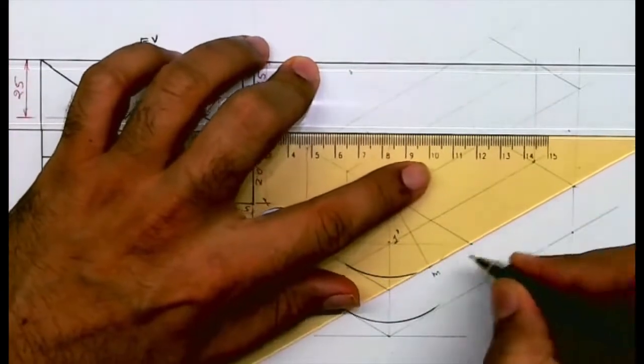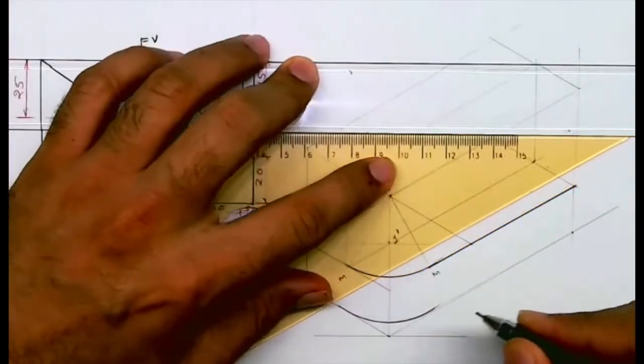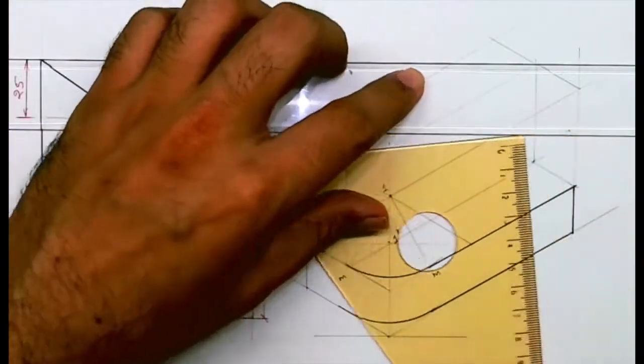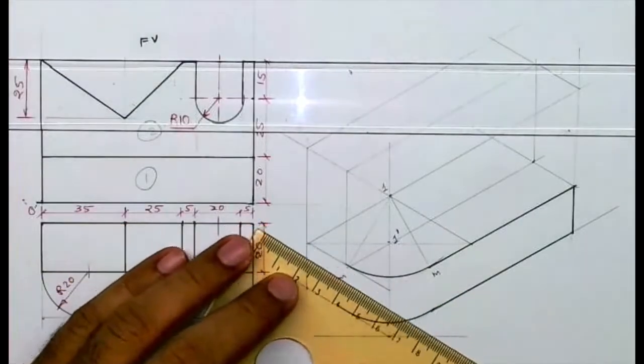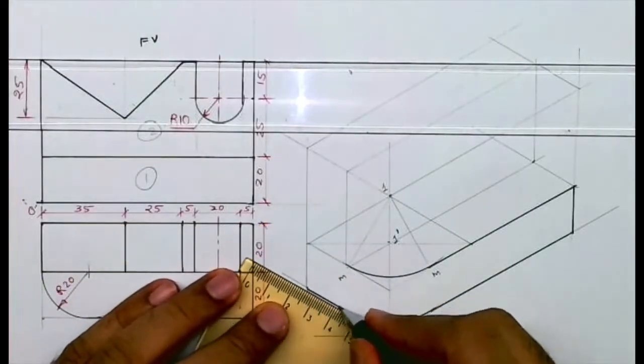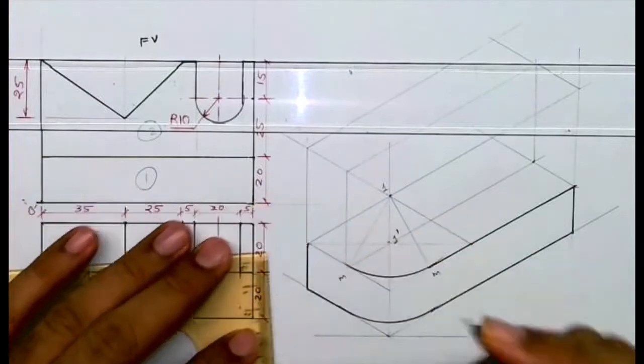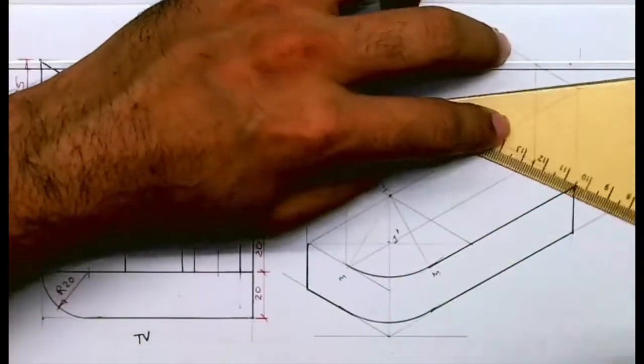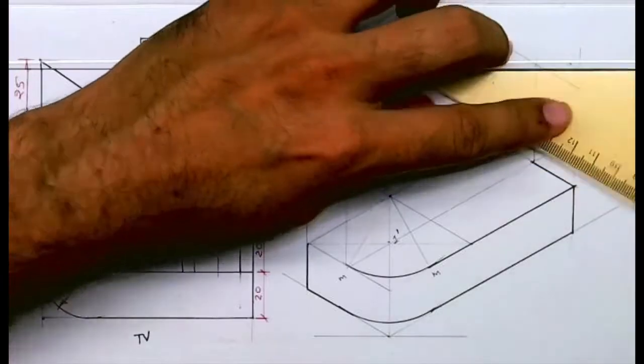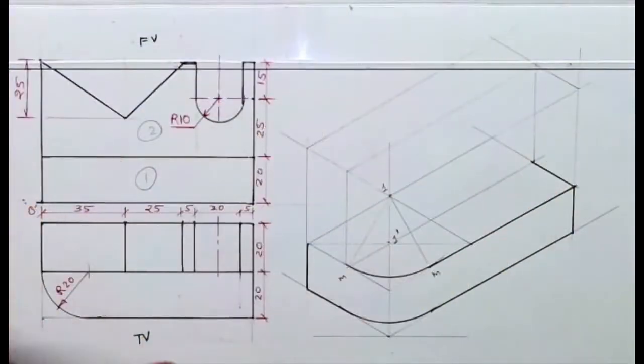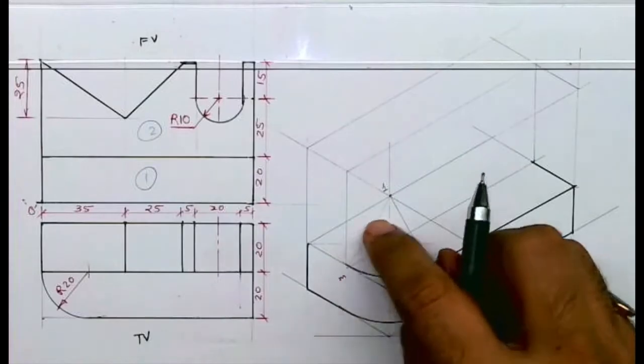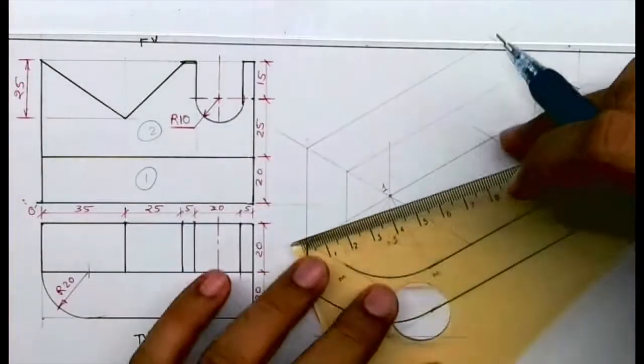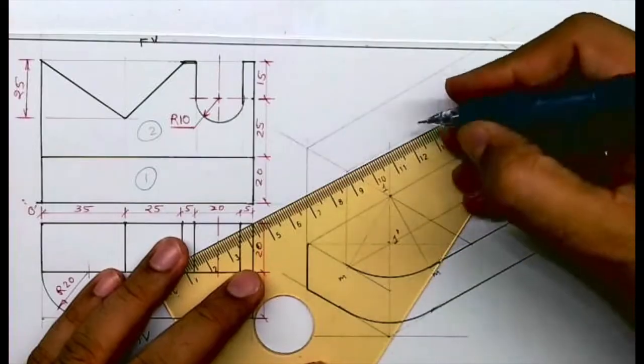Now I need to draw part 2. Part 2 is 20 behind. I'll name this part as A, B, C. The distance is 35 plus 25.